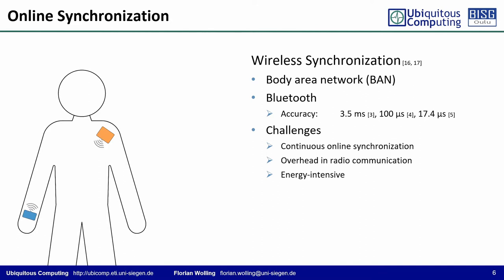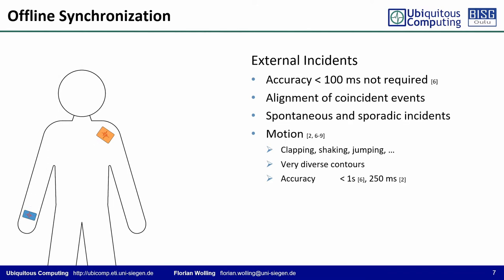Today's body area networks often utilize Bluetooth, which is optimized for low-power applications. The achieved accuracies are very good, but usually not required for typical wearable applications. In 2009, Banach et al. stated that for activity recognition, an accuracy better than 100 milliseconds is usually not required. That's why they proposed an offline synchronization method based on external incidents such as motion. The alignment of these sporadic but coincident events enables matching of time series offline, after the individual recording.